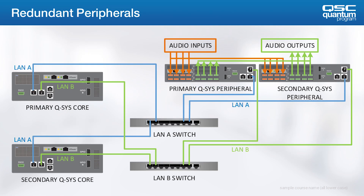Q-SYS also supports peripheral device redundancy in certain cases. Any required analog audio inputs and outputs would be paralleled to both primary and secondary devices. This is simple for devices using the relay switched inputs and outputs on the CIML4 input card and the COL4 output card. It's also usable for analog outputs on the Core 110F and IO8 Flex. The input circuits on the 110F and IO8 Flex are not relay switched, however, so we do not recommend they be used for this purpose.